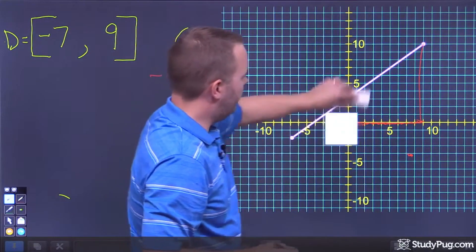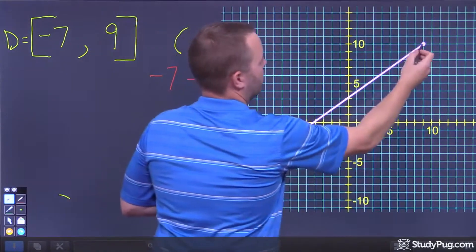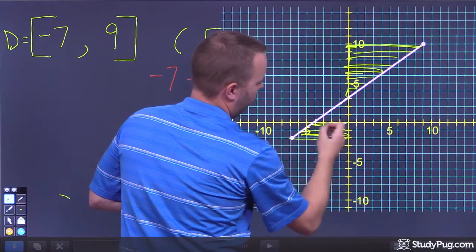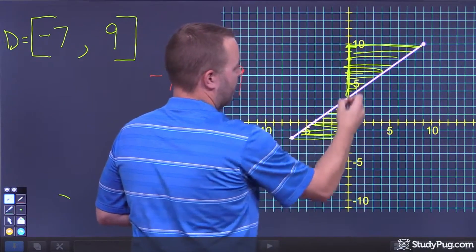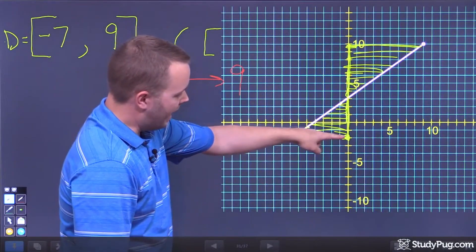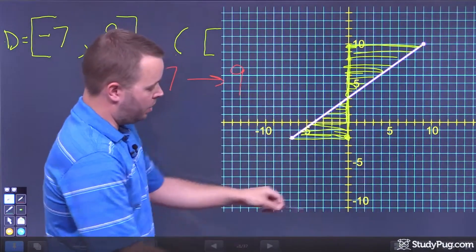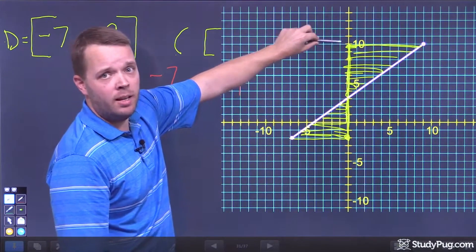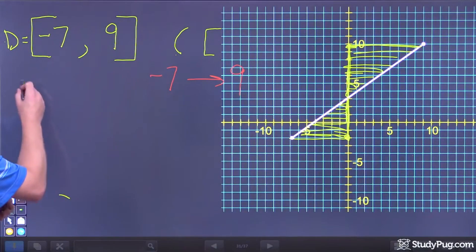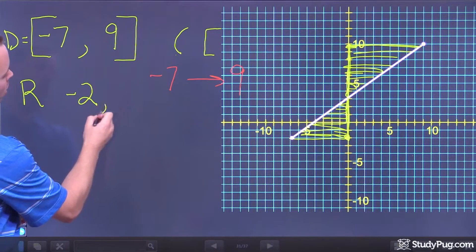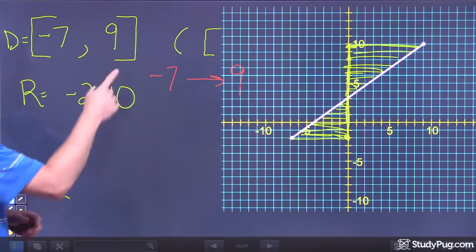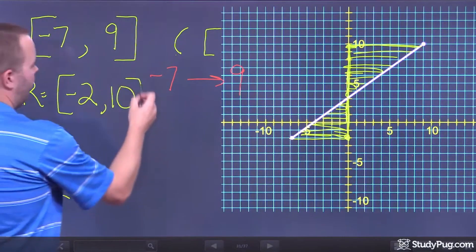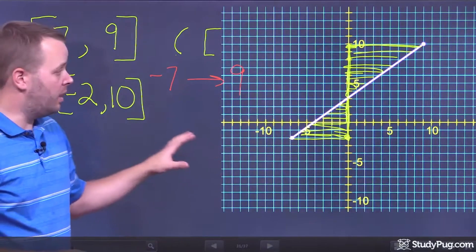We do the exact same thing for range, except now we compress vertically. All the points get compressed to the Y-axis, giving us values from negative 2 all the way up to positive 10. Using the range finder, you'd start beeping at negative 2, continuously beep because you're always touching a point, then stop at 10. Both endpoints are included — closed dots — so we use square brackets. That's interval notation, and it works really well for continuous graphs.